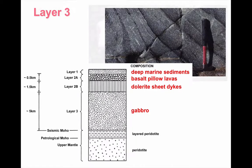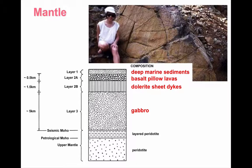Beneath layer 3, and below the Moho, we've got the mantle. The mantle is formed of peridotite, an ultramafic igneous rock. The layered peridotite we find at the top of the mantle is probably the result of magma differentiation from the gabbro, where early-formed olivines sink to the bottom.